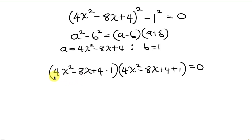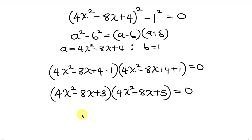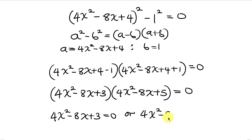Simplifying, we have (4x squared minus 8x, and 4 minus 1 is 3, so plus 3) times (4x squared minus 8x, and 4 plus 1 is 5, so plus 5) equal to 0. So we have two cases: either 4x squared minus 8x plus 3 equals 0, or 4x squared minus 8x plus 5 equals 0.